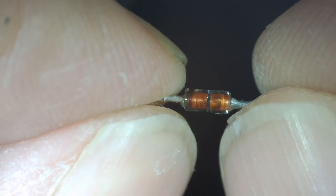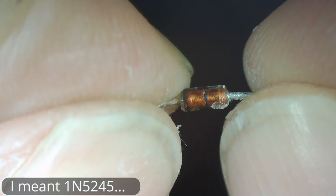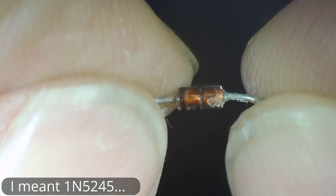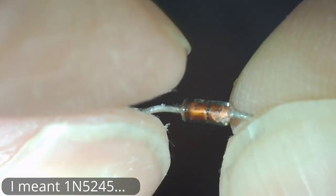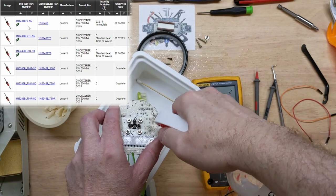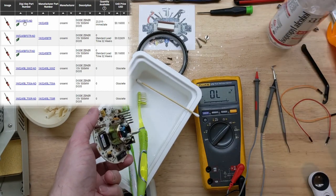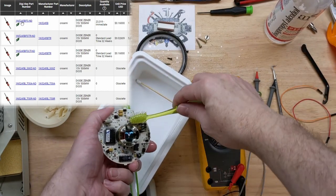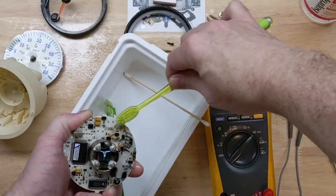So, this looks to be the 1N5245. So, if we look this up online, this is a 15-volt, half-a-watt zener diode. I'll probably replace it with a 1-watt. I have one that's 15.4 volts. It'll probably be fine.